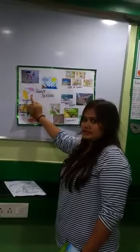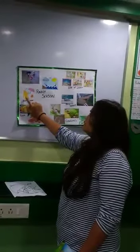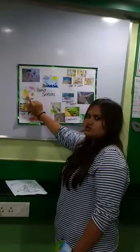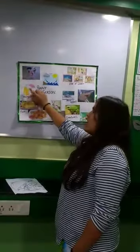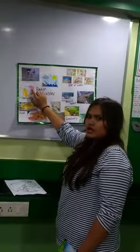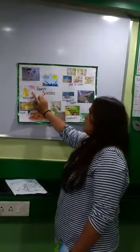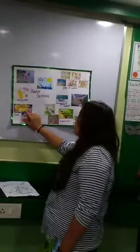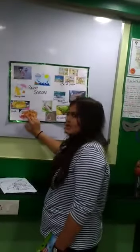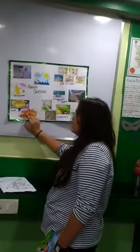What do we wear in the rainy season? We wear a raincoat, an umbrella and gum boots. We also love eating during the rain, like corn and some warm snacks like bhajiyas.